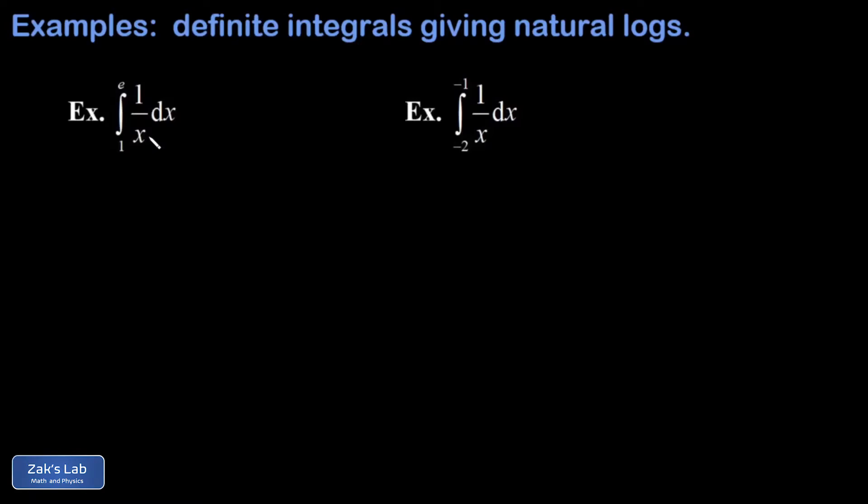In this video we're doing a couple basic definite integrals that result in natural logs. The fundamental theorem of calculus says to get a definite integral, I just have to guess the anti-derivative of the integrand and evaluate across the limits of integration. I'll leave this for another video, but the anti-derivative of 1 over x is the natural log of the absolute value of x. Those absolute value bars matter and are going to make a difference in the second example here.